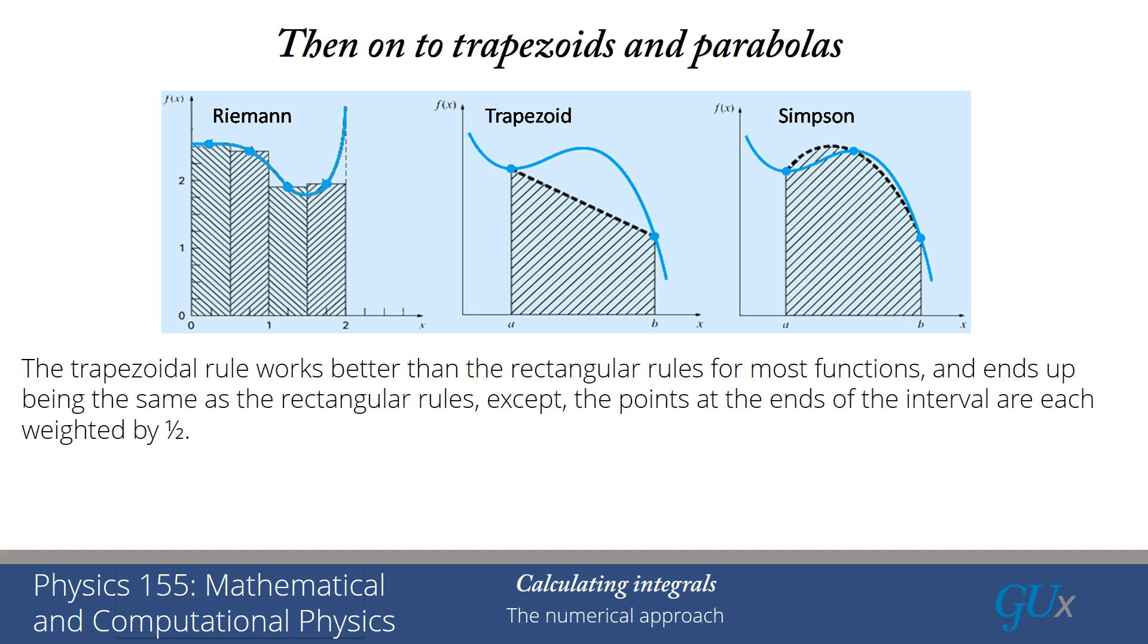And I end up having a rule that looks very similar to the rectangular rule, except the points at the ends of the interval are each weighted by one half because I only get one half of the trapezoid for the rules that end on the endpoint.